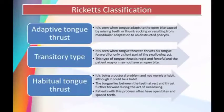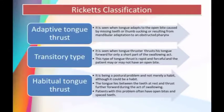According to Ricketts' classification, tongue thrust is divided into three types: adaptive, transitory, and habitual. Adaptive tongue thrust is seen when the tongue adapts to an open bite caused by missing teeth, thumb sucking, or mandibular adaptation to an obstructed airway. The transitory type occurs when the tongue thrusts forward for only a short part of the swallowing act and is rapid and forceful. The habitual tongue thrust is a postural problem where the tongue lies between the teeth at rest and thrusts further forward during swallowing, often associated with open bite and spaced teeth.